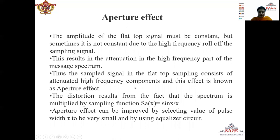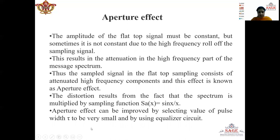Now we will talk about the limitation of the flat top sample signal. When we consider the spectrum of the flat top sample signal, the amplitude of the flat top signal must be constant. But sometimes it is not constant due to high frequency rolloff of the sample signal. This results in attenuation in the high frequency part of the message spectrum. This distortion results from the fact that the spectrum is multiplied by the sampling function sinc(x) = sin(x)/x, which is the Fourier transform of the non-periodic gate function. This aperture effect can be improved by selecting the pulse width tau to be very small, or by using an equalizer circuit.